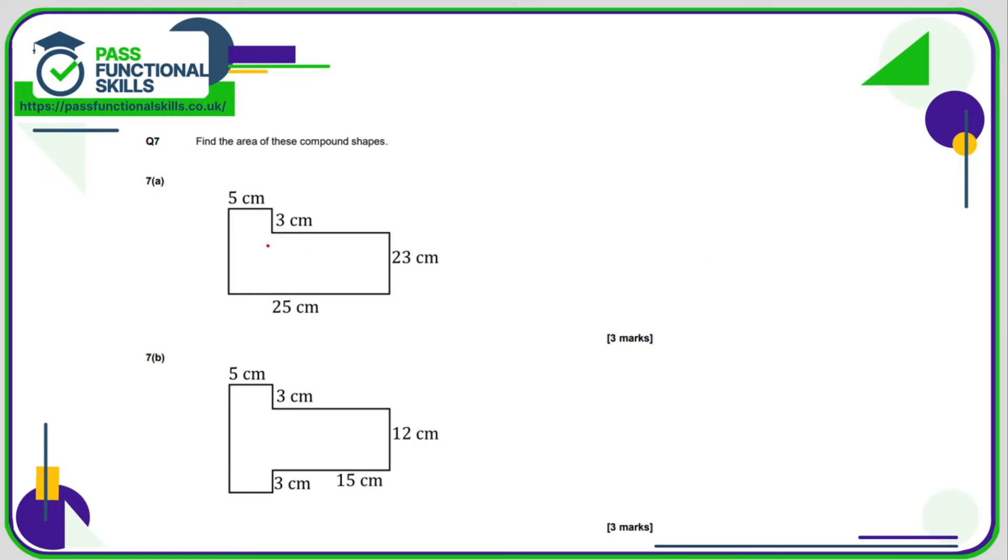Question number 7. So what I'm going to do is turn them into two rectangles here. So this one here is a 3 times by 5, which is 15, and this is 23 times by 25, which is 575. So add these together, it comes to 590 square centimetres.